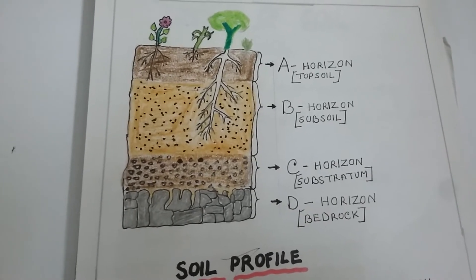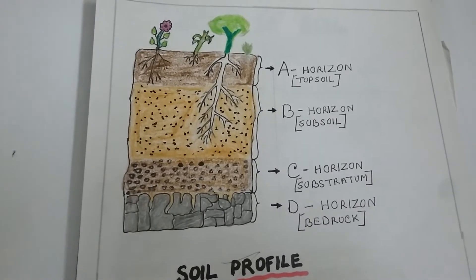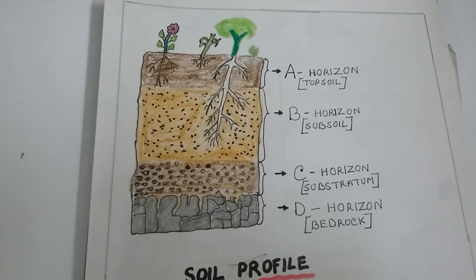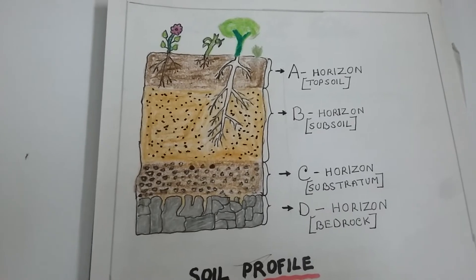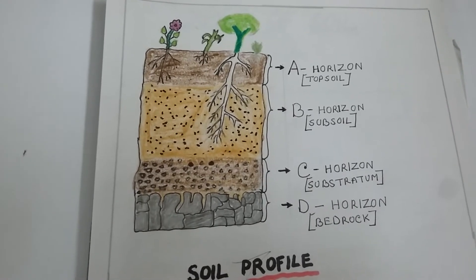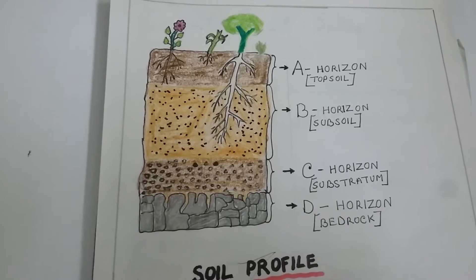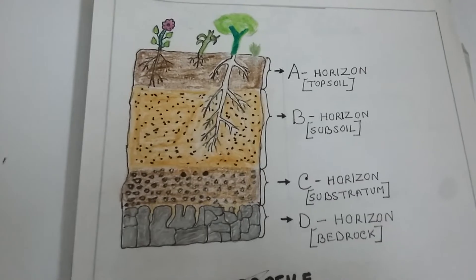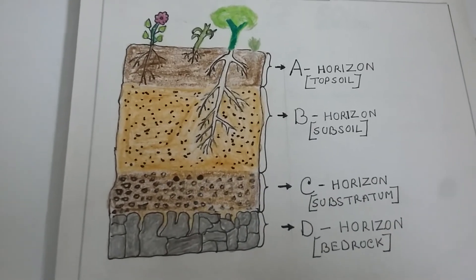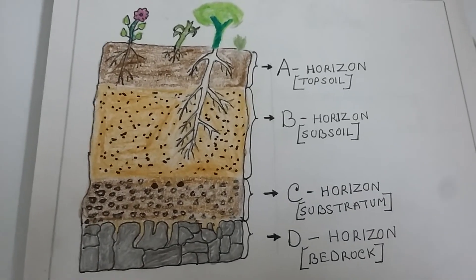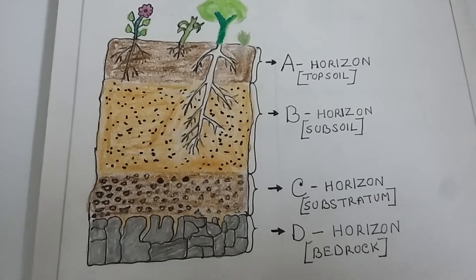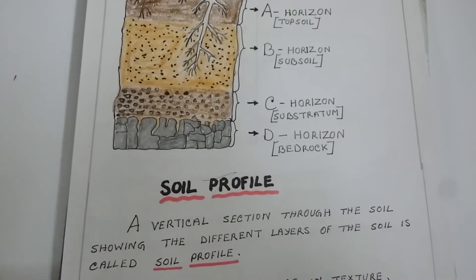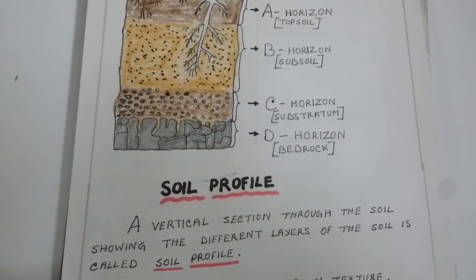We usually see the top surface of the soil, not the layers below it. If we look at the sides of a recently dug ditch, we can see the inner layers of the soil too. Such a view enables us to see the soil profile at that place. A vertical section through the soil showing the different layers of the soil is called the soil profile.